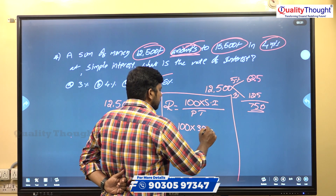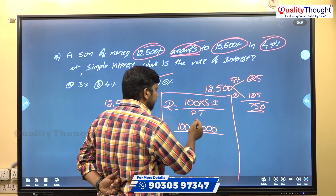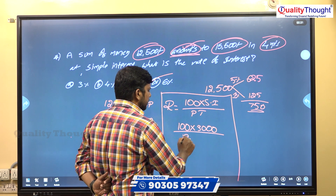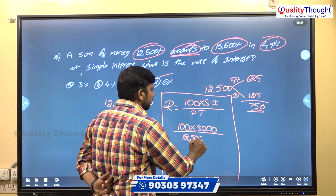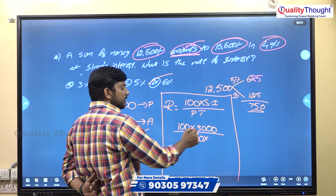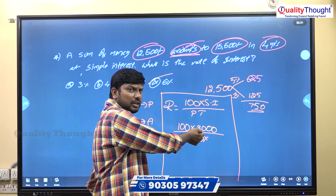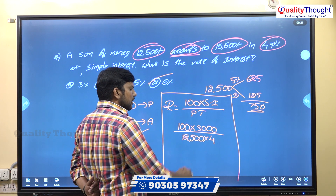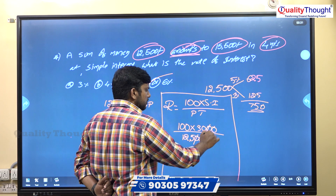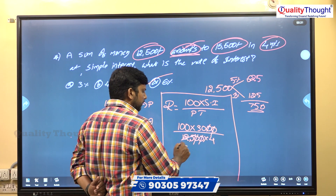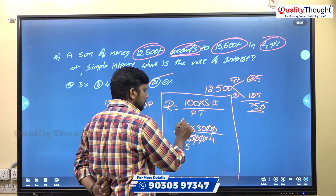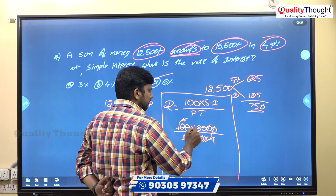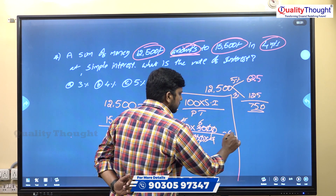So 100 × 3,000 rupees divided by principle 12,500, into time period 4 years. After cancellation, we get 6 percent. So whether calculated without formula or with formula, the rate of interest is 6%.